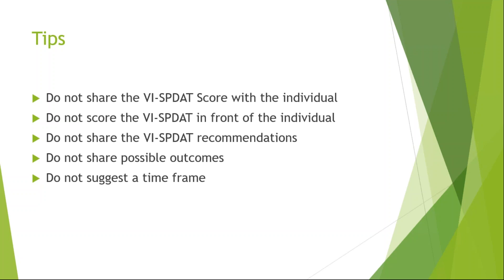Don't share the VI-SPDAT recommendations. You don't want to say 'oh you got a 10, the recommendation is permanent supportive housing,' because maybe that is not actually the right specific housing for that person, and there might not be available permanent supportive housing units in your community at that time. You don't want to tell them that and then have them be waiting for a long time. Similarly, don't share possible outcomes — because of the way the prioritization list works, they could be at the top of the list one week and then the next week there are five people ahead of them. So don't give them a timeframe or a guaranteed outcome, but do make sure they know you will definitely consider them for any housing resource that comes up.